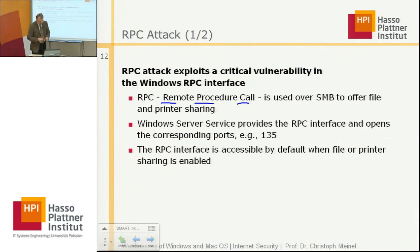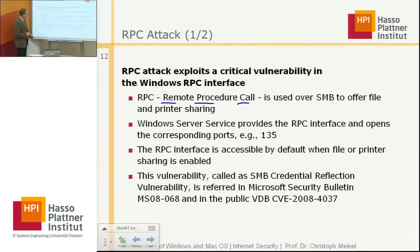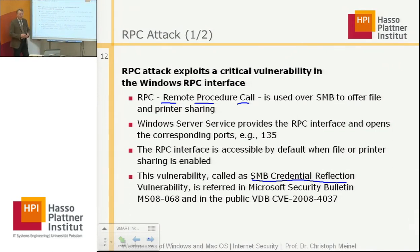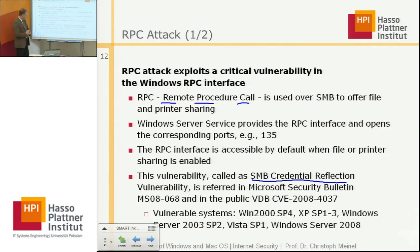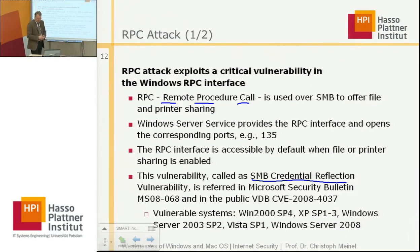The remote procedure call interface is accessible by default when file or printer sharing is enabled. This vulnerability is called SMB credential reflection and is referred to in Microsoft Security Bulletin MS08-068 and in the public vulnerability database CVE. The '08' is short for 2008, the year it was discovered. The vulnerable systems are Windows 2000 SP4, XP SP1 to SP3, Windows Server 2003 SP2, Vista SP1, and Windows Server 2008.